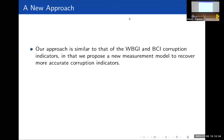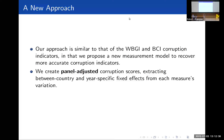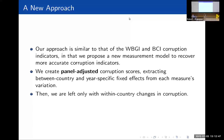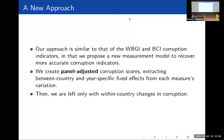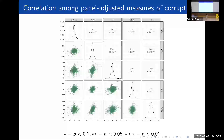Our approach is similar to that of the WBGI and the BCI in that we propose a new measurement model to recover more accurate corruption indicators. First, we create a panel-adjusted corruption score where we extract that between-country variation that drives the correlation between measures, as well as the year-specific fixed effects. Then we're left with only the within-country changes. To show a similar graph where we have these panel-adjusted measures of corruption, we see that the correlation completely falls apart, meaning that any study reliant on the validity of within-country measures of corruption may also fall apart.